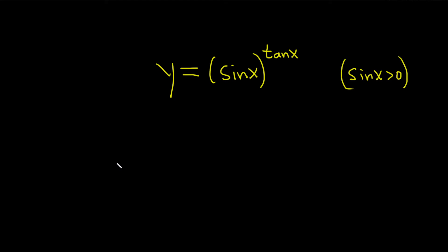So to use logarithmic differentiation, we start by taking the natural log on both sides. So we have ln of y equals, and then here we have ln of the sine of x to the tangent of x.